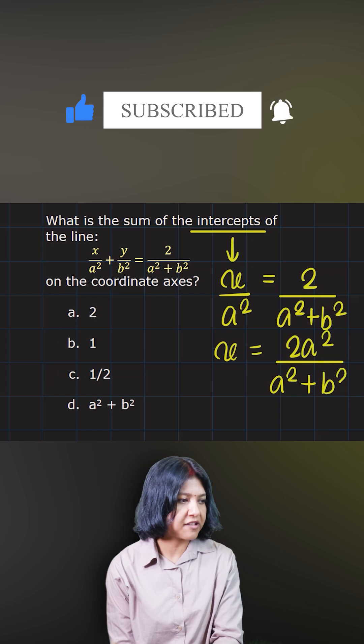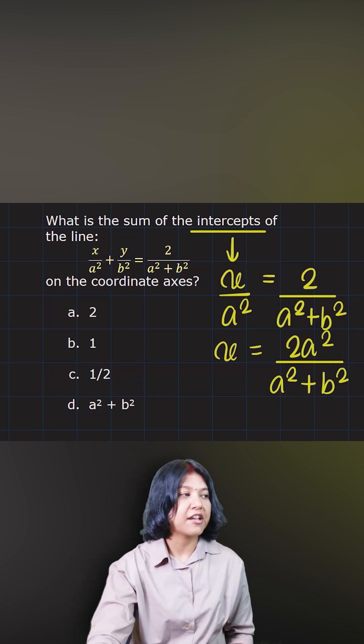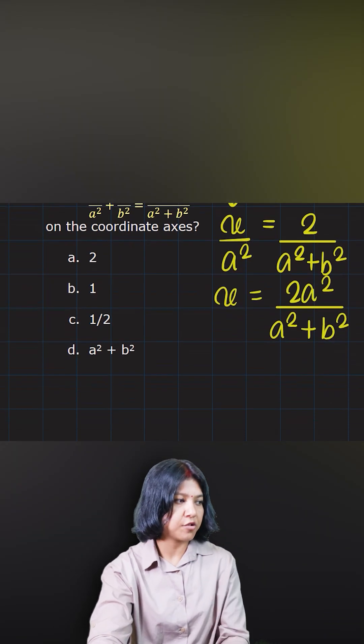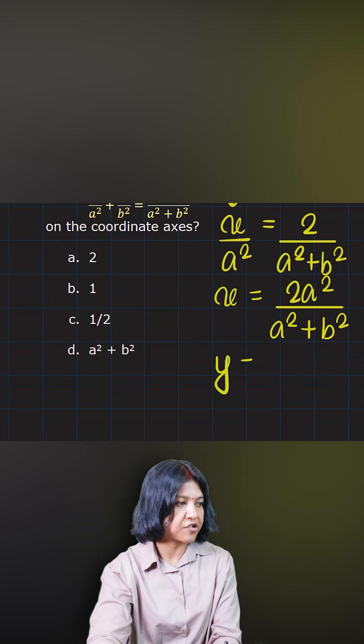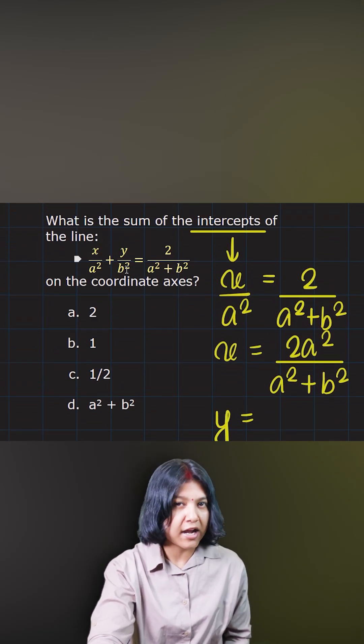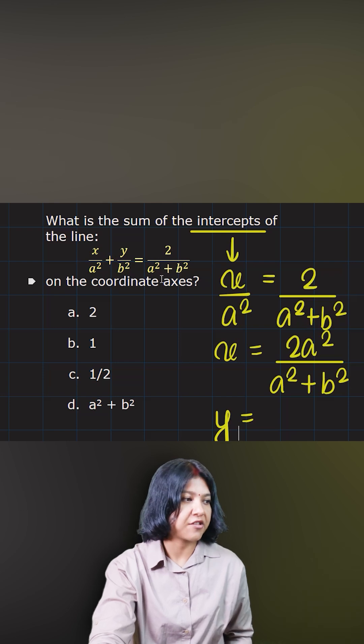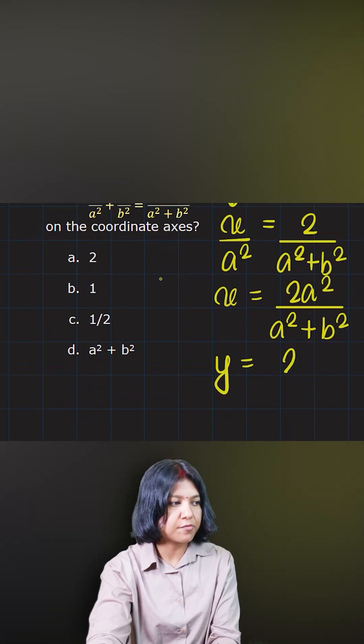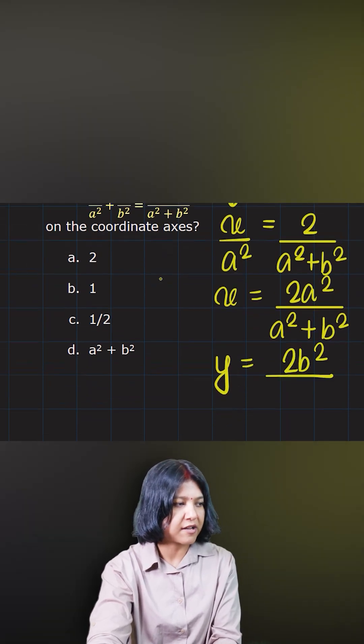Now likewise, if you have to see the pattern for finding the y-intercept, it would be the same. You want to plug in x as zero, so the x term gets eliminated, and this b² which is the denominator of y eventually goes to the other side. So I'm going to be very quick and write down 2b² upon a² plus b².